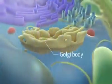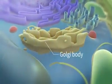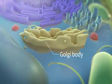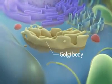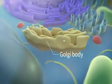The Golgi body is the cell repository. The substances produced in it are stored there and then transported to other parts of the cell.